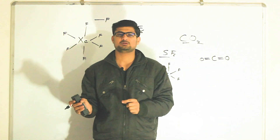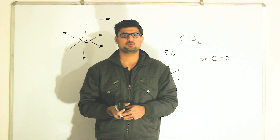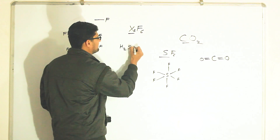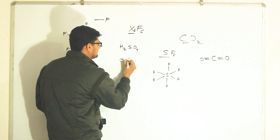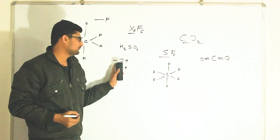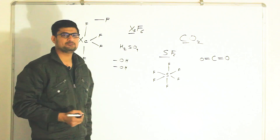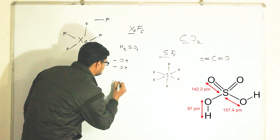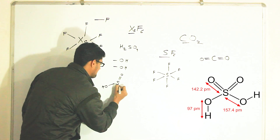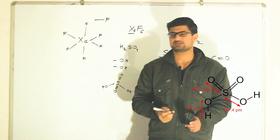One more rule: if both oxygen and hydrogen are present, try to use them as an OH fragment. For example, in the case of H2SO4, both hydrogen and oxygen will combine to form two OH fragments, while two oxygen atoms will form double bonds. This gives us the structure of H2SO4.